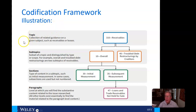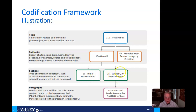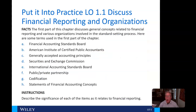Let's look at an illustration. Here we have our topic, which is a collection of related guidance on a given topic — in this case, receivables. Then there are subtopics: debt restructuring by creditors, overall, how we measure it initially and subsequently, and then loans and trade receivables not held for sale. You can read this yourself and get a good feeling for this codification framework.